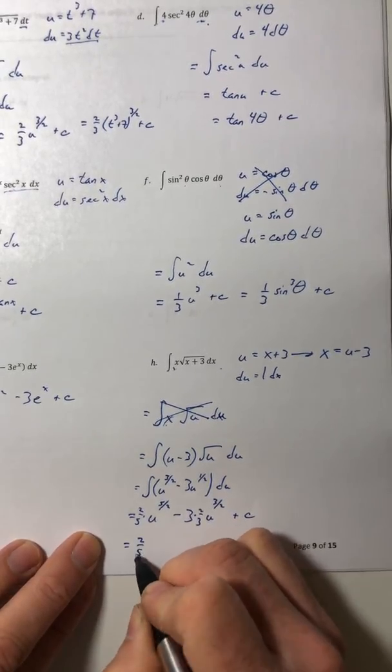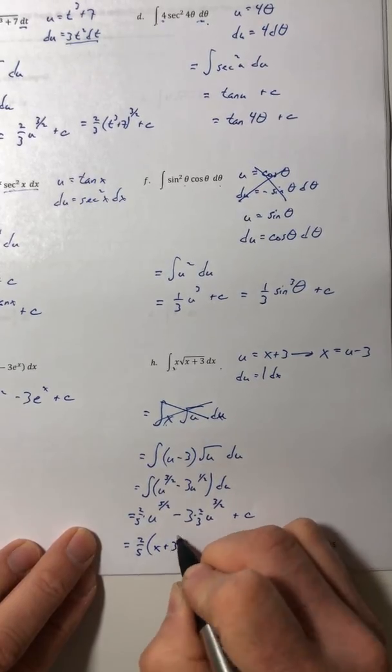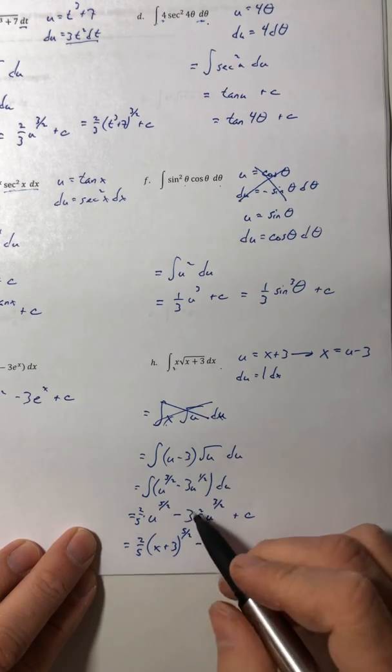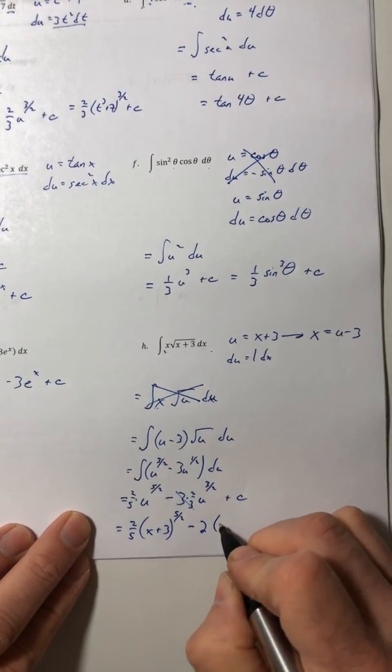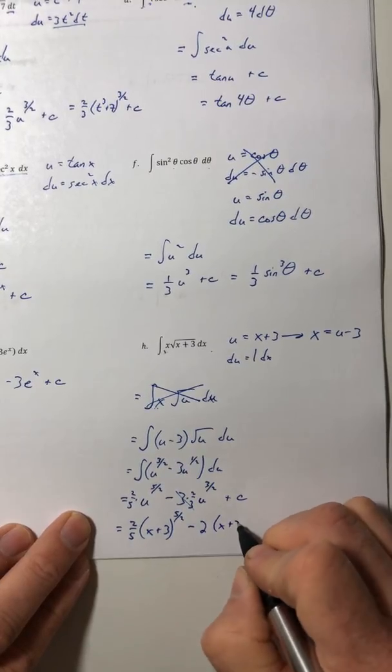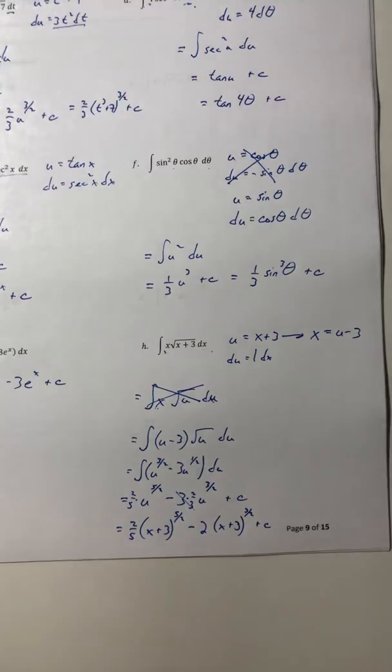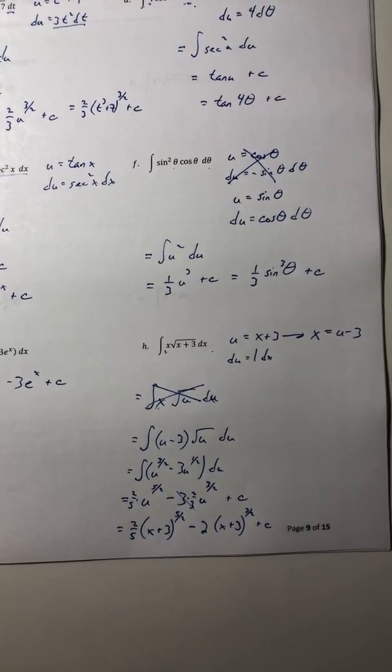And now just change everything back in terms of x and simplify the fractions as well—so the threes cancel. And there you go. All right, in the next video we'll take a look at some more examples and some other stuff you can do with these things. So thank you.